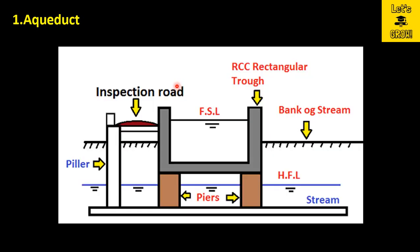We can understand this from the figure. Here you can see an RCC rectangular trough, which is the cross section of a canal. In the canal we use the term FSL — full supply level. Below this canal there is a stream, for which we define the term HFL — high flood level. In this figure you can see that the RCC rectangular trough or the bed of the canal is above the high flood level of the stream. So when the high flood level of the stream is below the canal bed, the structure proposed is known as the aqueduct.